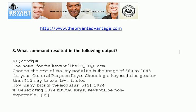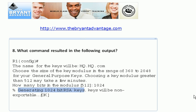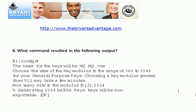Question eight: What command resulted in this output? If you've never seen this output before — and on an exam you'd usually have multiple choice — take your time and look through it. You can see something about keys, general purpose keys, key modulus — we're generating some RSA keys. So what command resulted in that output?